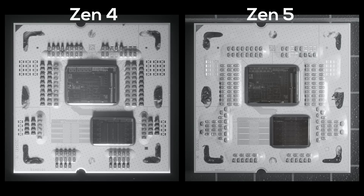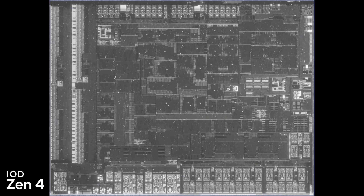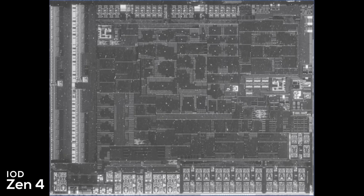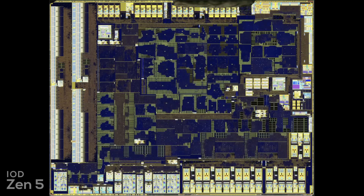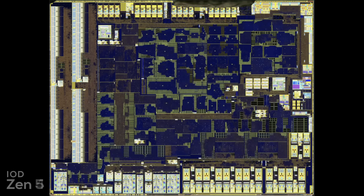So what has changed compared to Zen 4? Well, nothing. The Zen 5 IO die is exactly the same as the one used in Zen 4. If you compare them with a die shot overlay, we can see that they're identical. And it does make sense — Zen 4 already provided enough state-of-the-art IO. No reason to spend money and engineering time creating a new IO die when the one you already have works fine. AMD did the same with Zen 2 and Zen 3, where they reused the same IO die for two CPU generations.